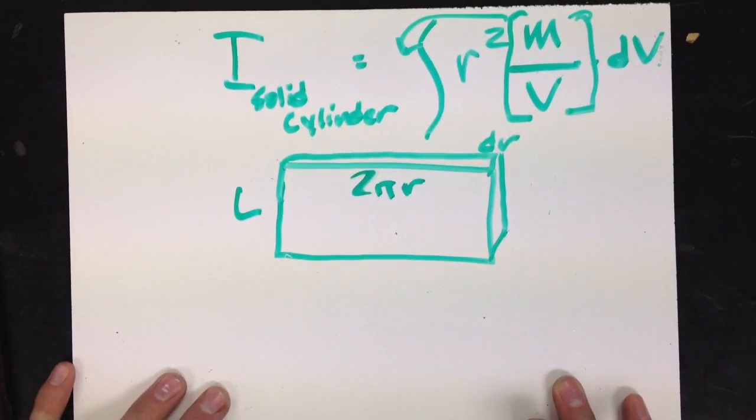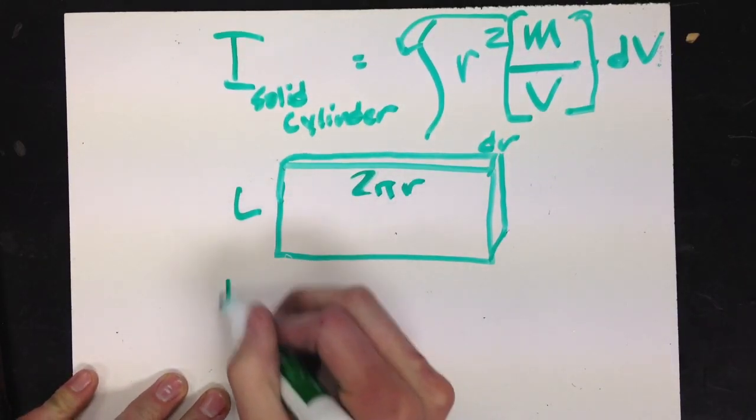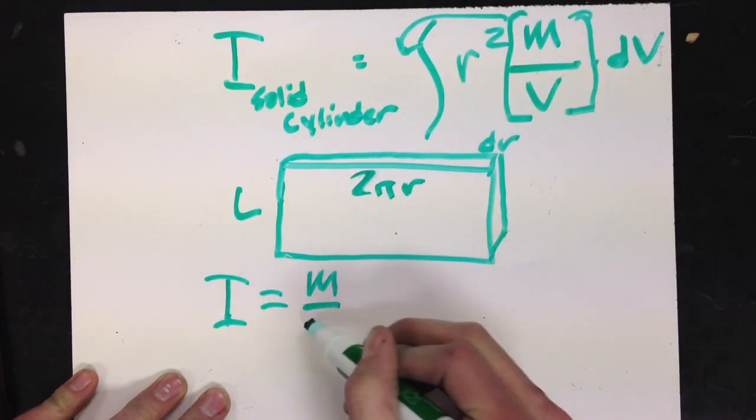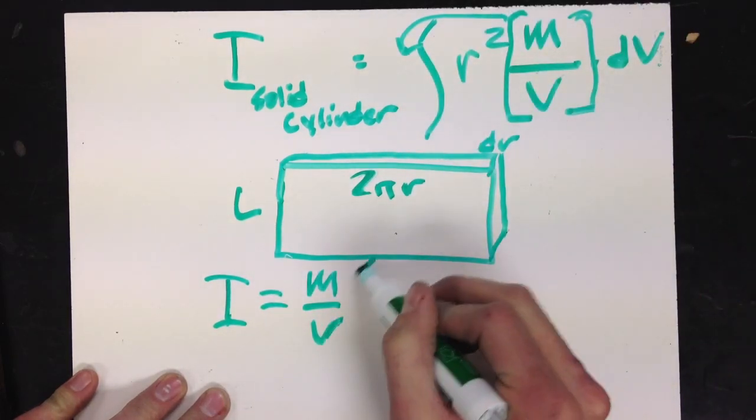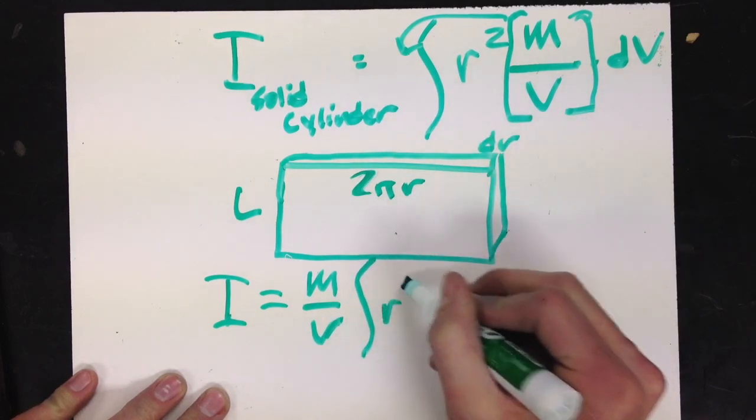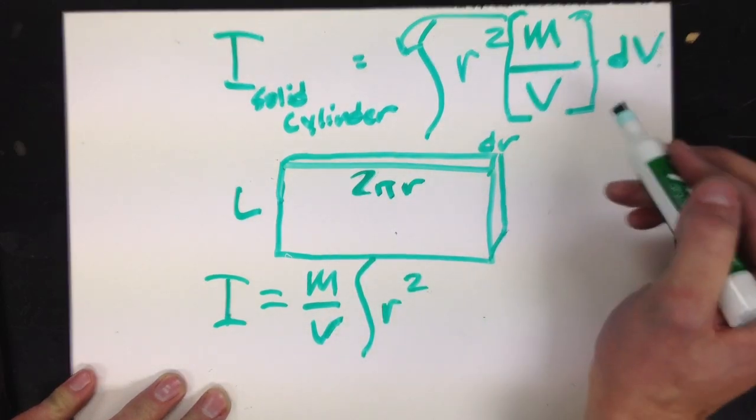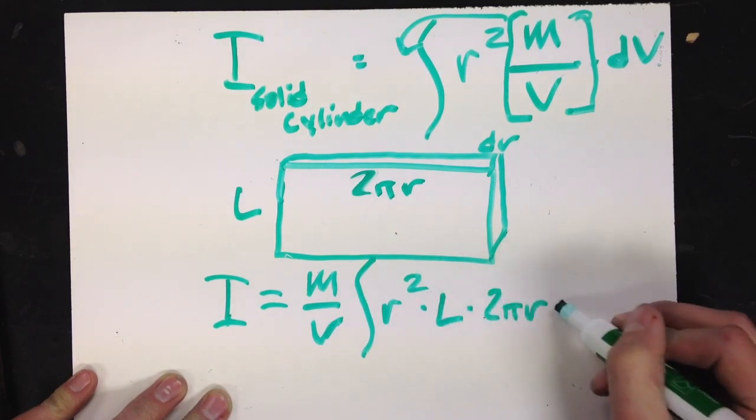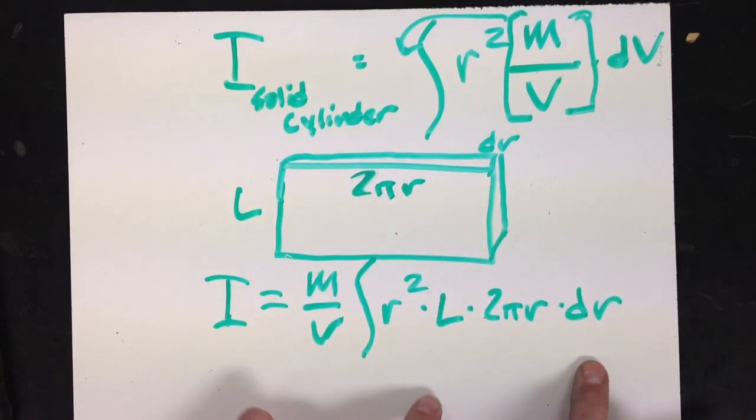So let's rewrite this with those substitutions. I end up with I being equal to, I'm going to pull out m over v, times the integral. I've got r squared times dv, well, that's times L 2πr times dr. Ah, look at that. I have r dr. I'm all set when it comes to integration.